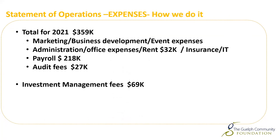The last piece of the activities or the operations and where we spend money is on expenses — this is how we do what we do. We spend money on marketing, business development, and event expenses. We spend money in administration, which includes rent, insurance, and IT services. Our payroll is the passionate people that keep things going. We spend a total of $359K in expenses. Payroll made up $218K, audit fees $27K, and rent $32K — those are the big ones.